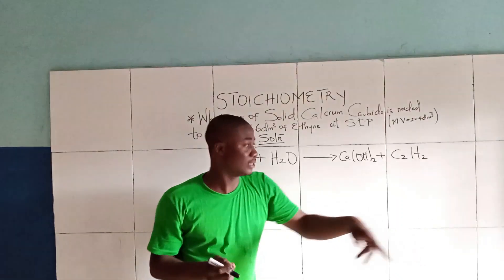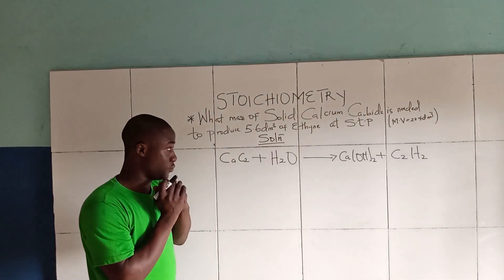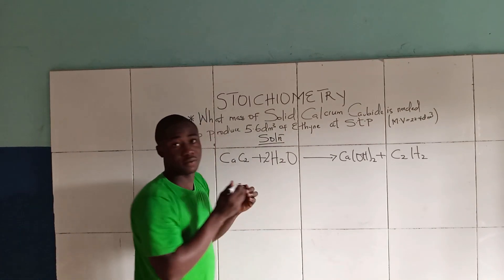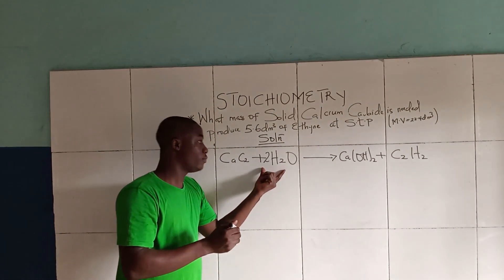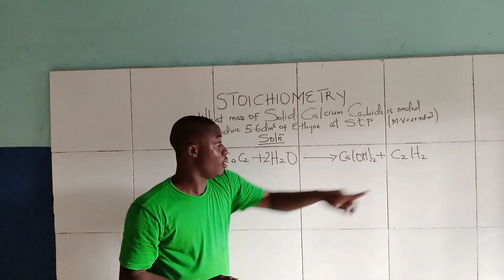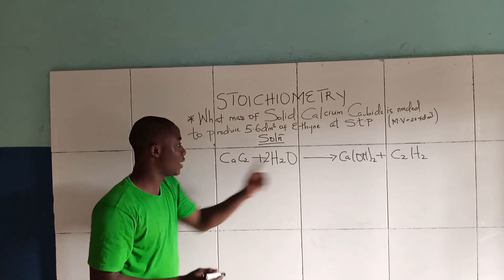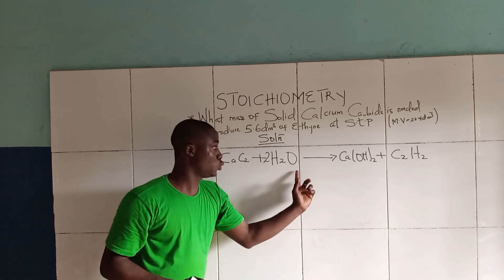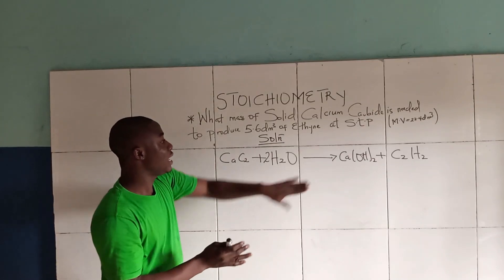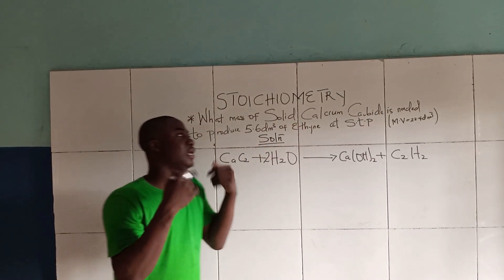Now let's balance this reaction. We place 2 moles of water on the left side: hydrogen becomes 4 on the left and 2+2=4 on the right, carbon is 2 and 2, calcium is 1 and 1, oxygen is 2 and 2. So the balanced equation is: CaC₂ + 2H₂O → Ca(OH)₂ + C₂H₂. This is the reaction for this question.